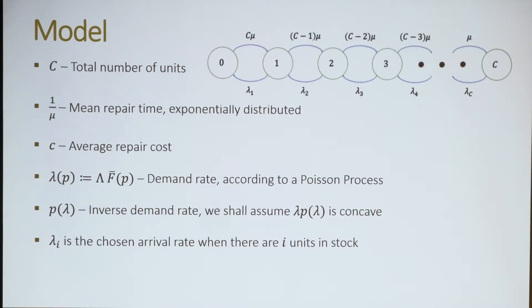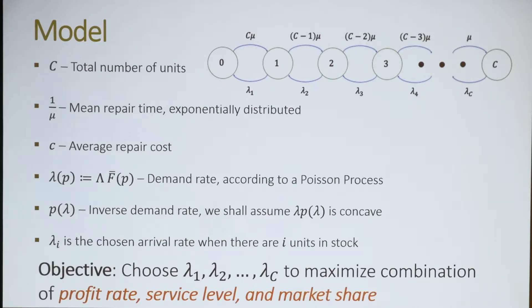So this is the model. Underlying all this you have some Markov chain. So the state space is just how many units of inventory do I have available. And the rest of them must be in repair. So if I have I units available, that means C minus I units are in repair. So I'm going to see units coming back to me at C minus I times mu. And when I have two units available, I am allowed to set the price to be some number P2, which corresponds to a demand rate lambda 2. So overall my decision variables are these lambdas. For every inventory state, I can set a price or a corresponding arrival rate. So my objective is I want to choose these lambdas to maximize my overall profit rate. And also maybe I want to think about multiple objectives, including my service level and my market share.